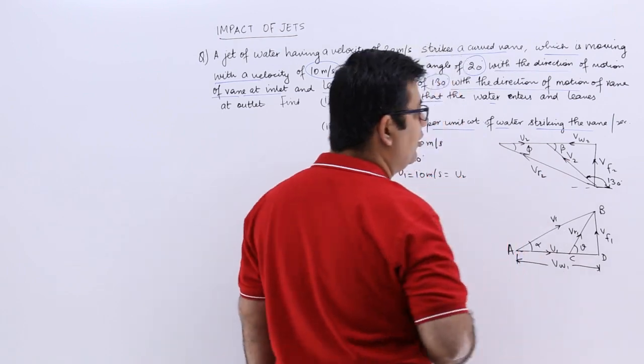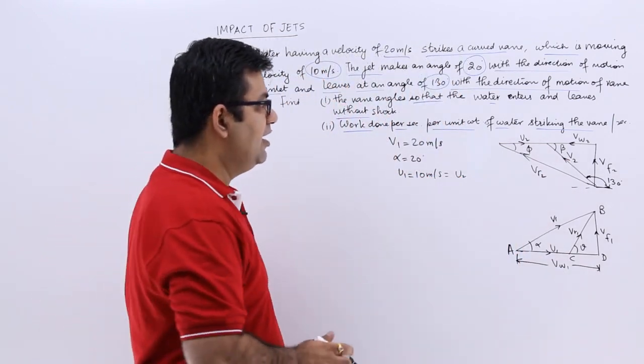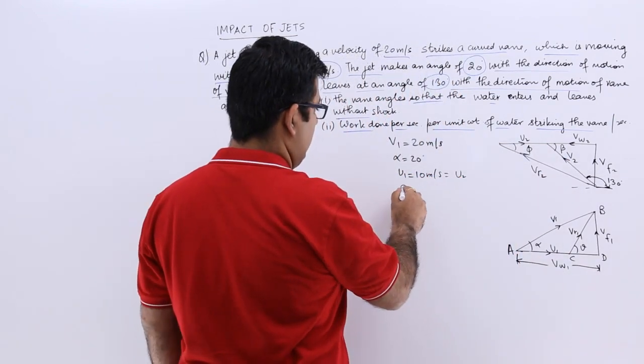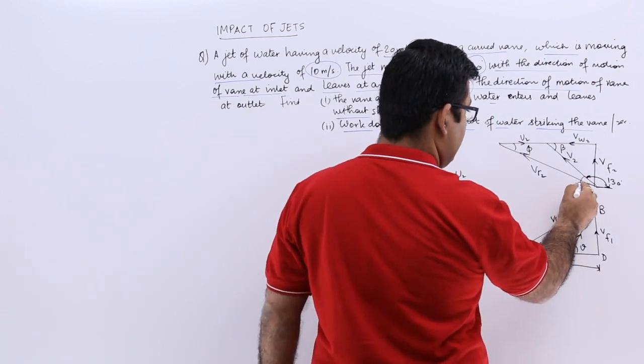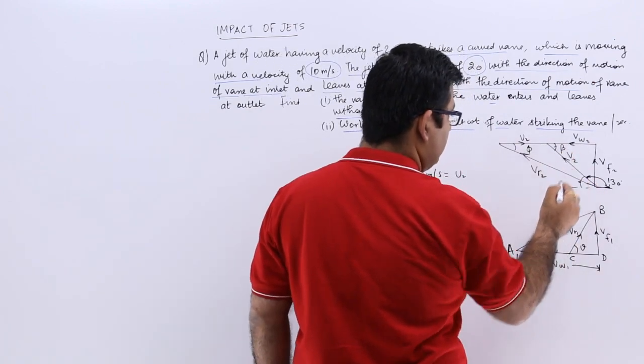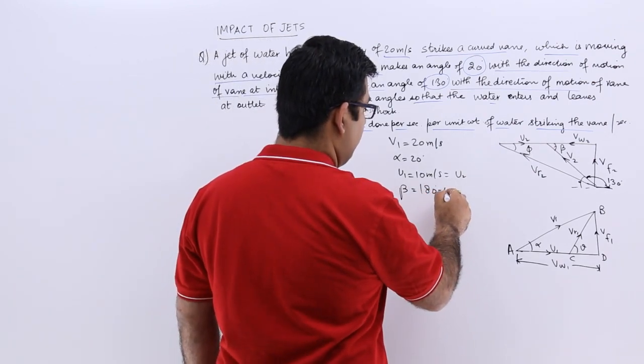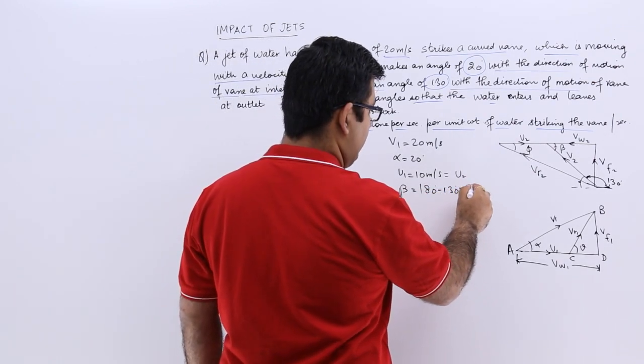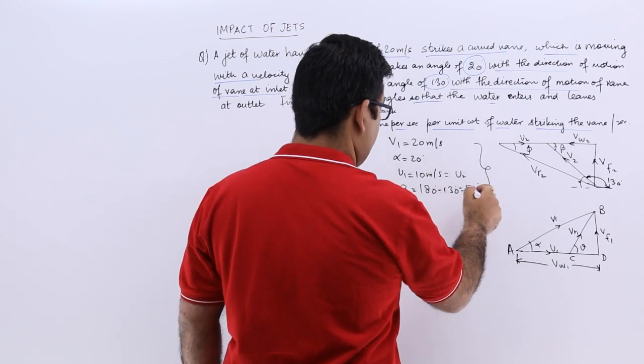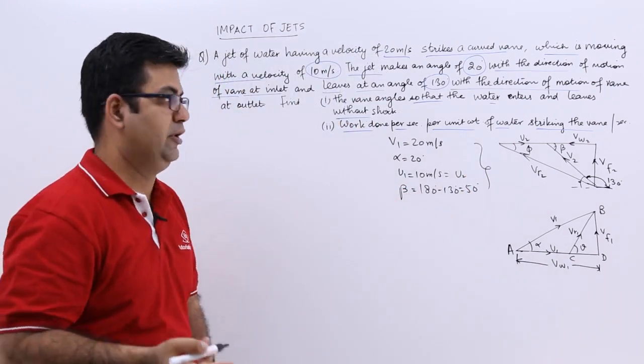So what would be the value of beta? The value of beta would be this angle. This is equal to this because of the transversal and the parallel lines. You will have 180 minus 130 which is 50, so beta is 50, alpha is 20.